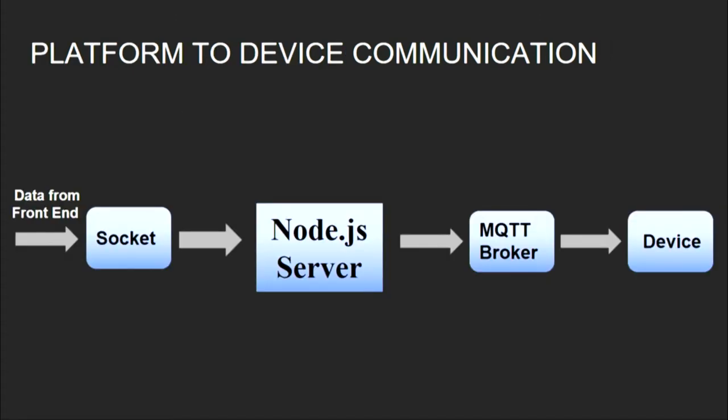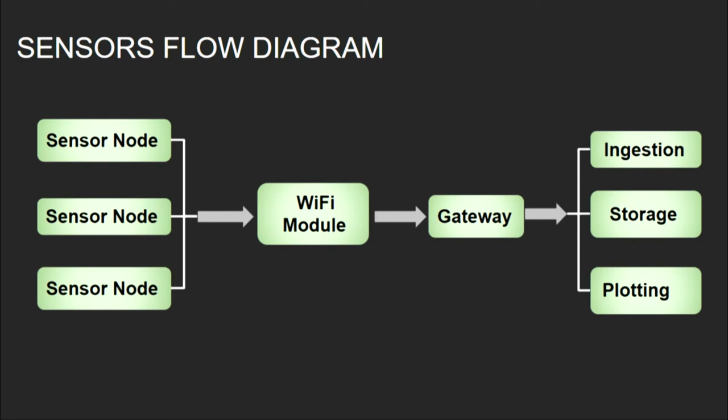Platform-to-device communication consists of commands the user sends from the dashboard, such as switching a device on and off or regulating its intensity. These are also sent to the server using a socket and published onto the MQTT broker, ready for subscription by the device.